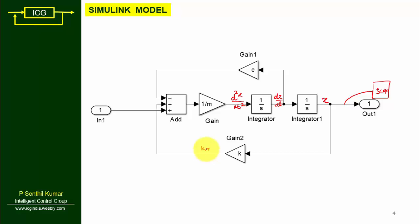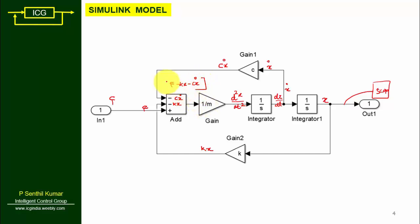x is multiplied by k to give kx, which feeds back. x·dot is multiplied by c to give c·ẋ, which also feeds back. f is the input. This summing point represents F − kx − c·ẋ, which is then multiplied by 1/m to give d²x/dt². This corresponds exactly to the equation d²x/dt² = (1/m)(F − kx − c·ẋ) represented by this Simulink model.